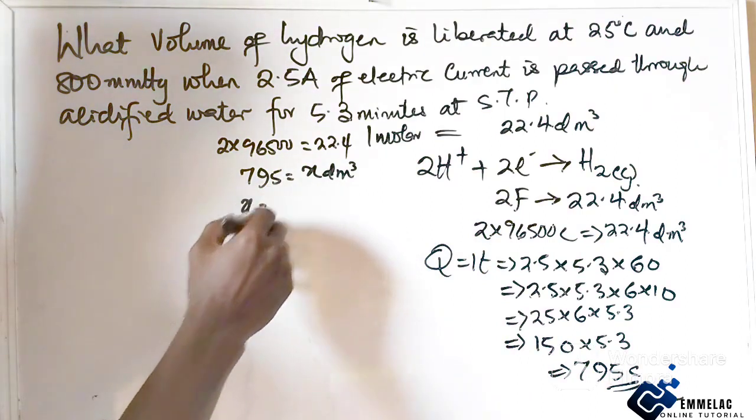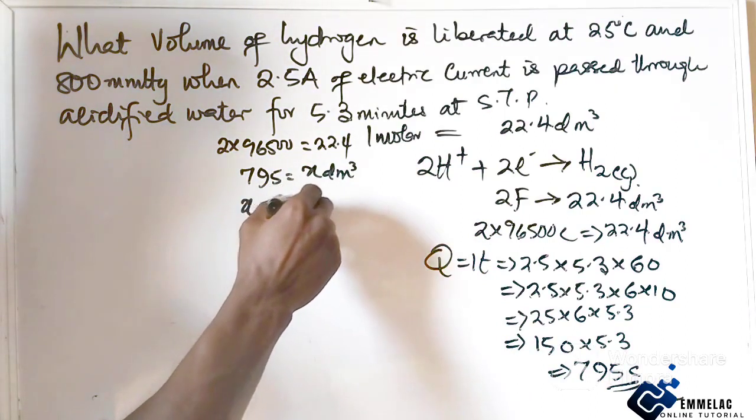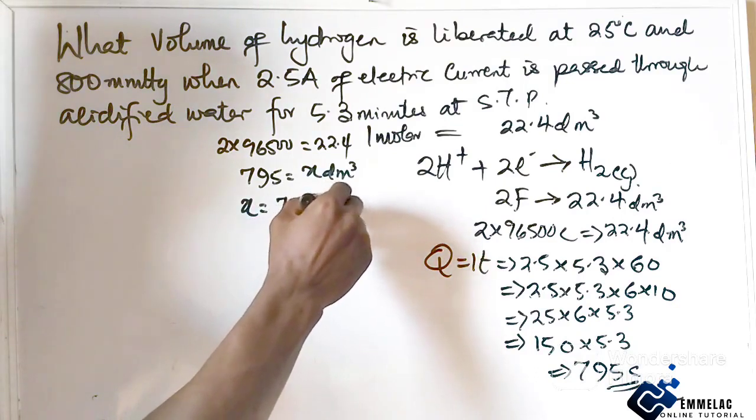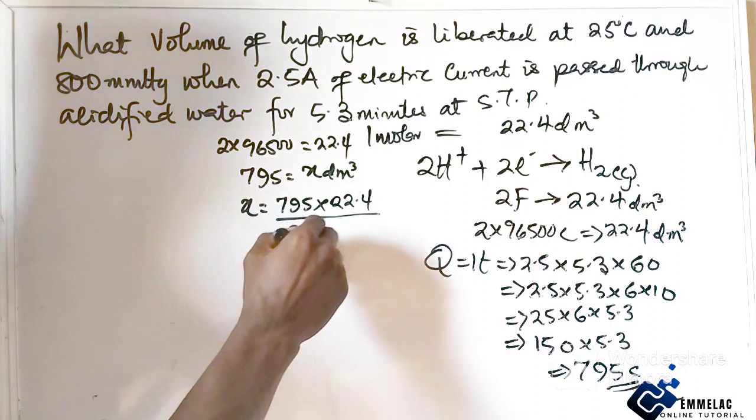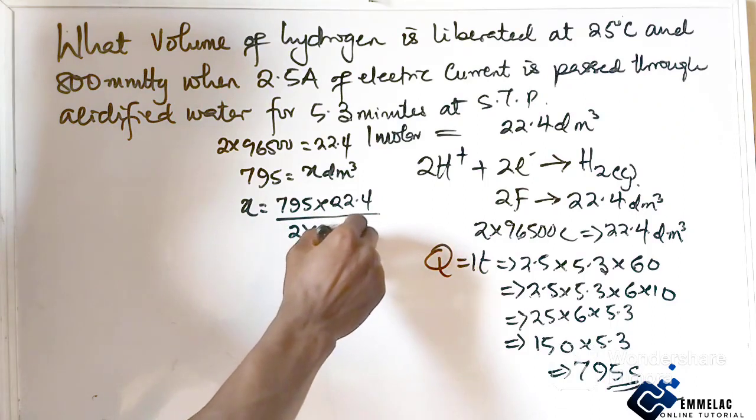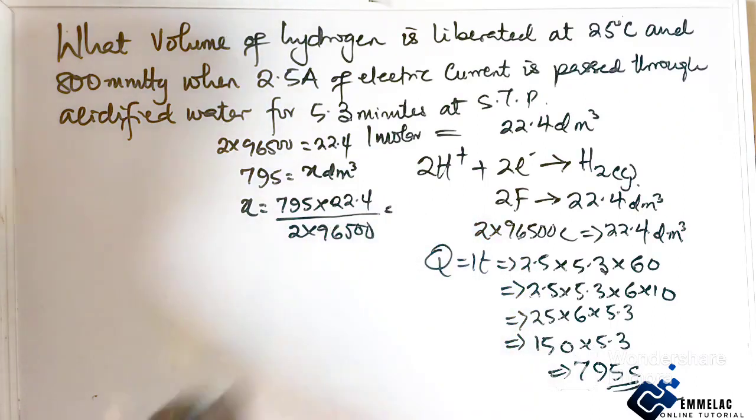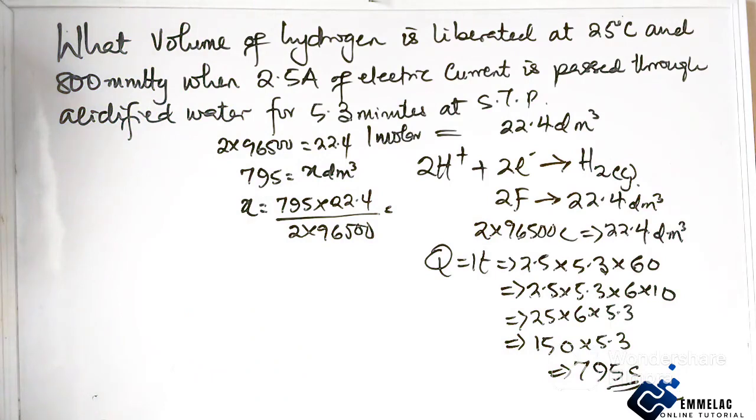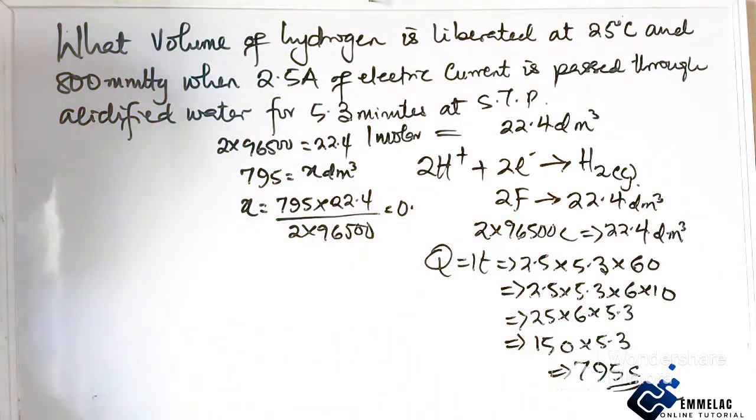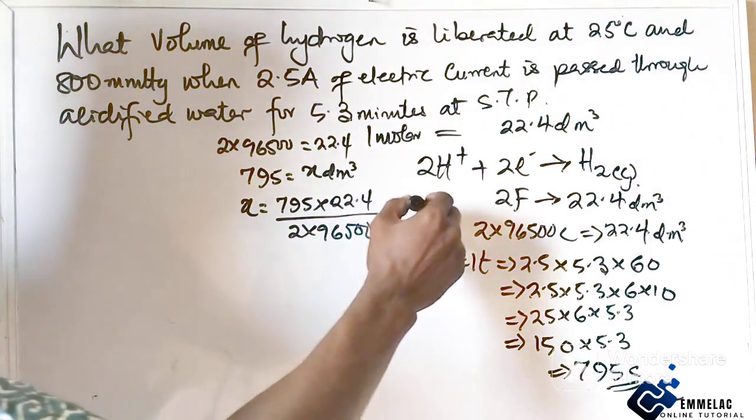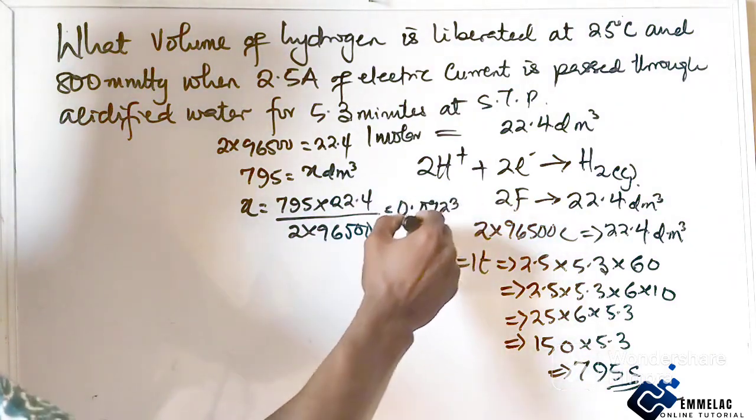We now have that X will give us 795 times 22.4 over 2 times 96500. Now using the calculator we get 0.0923 decimeter cube.